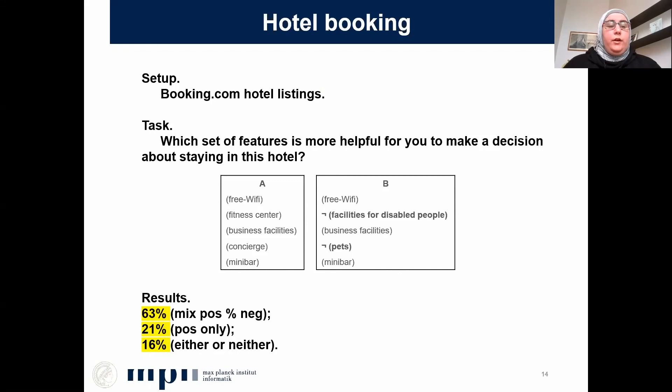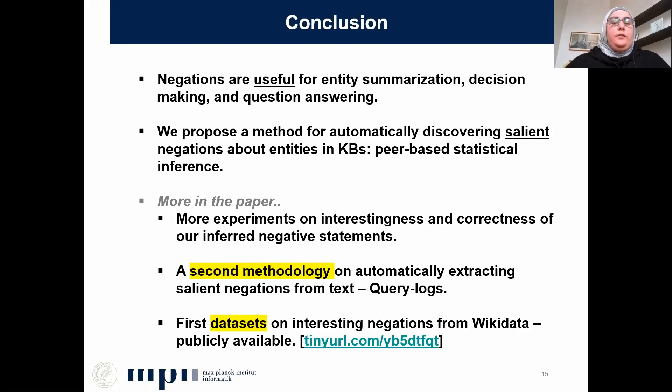In this work, we showed that negations are useful for entity summarization, for decision making, and for question answering. We propose a method to automatically discover salient negative statements. A few things I did not have time to mention here but would encourage you to check in the paper: we do more experiments on interestingness and correctness of our statements, we propose a second methodology that extracts salient negations from text, and we make the first datasets on interesting negations in Wikidata publicly available. Please visit our webpage. Thank you for listening — I look forward to answering your questions in the interactive session.